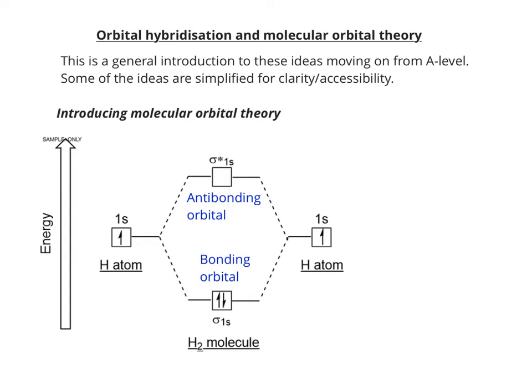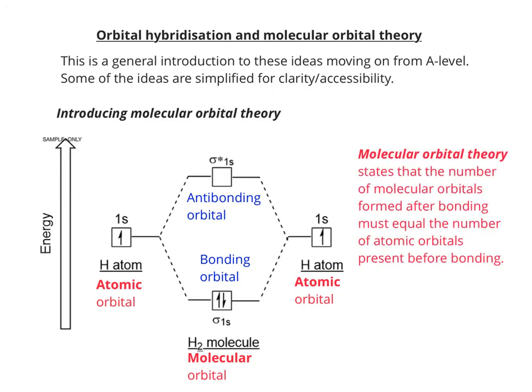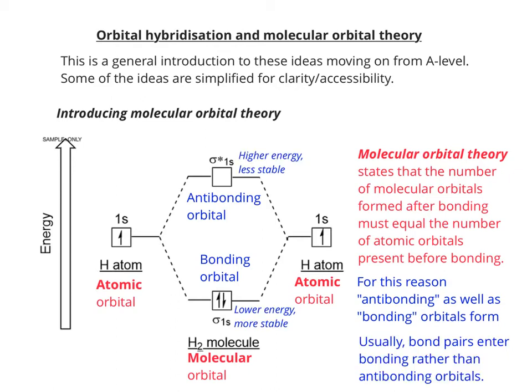If we draw an energy level diagram to illustrate this, each hydrogen atom contains an atomic orbital, 1s¹. If the 1s¹ orbitals overlap, they create a molecular orbital. However, molecular orbital theory states that the number of molecular orbitals formed after bonding must equal the number of atomic orbitals present before bonding. So we get antibonding orbitals as well as bonding orbitals, and for reasons of stability and energy, bond pairs usually enter bonding rather than antibonding orbitals.